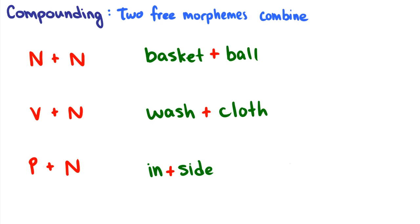The first one is compounding, and compounding occurs when two free morphemes combine. In other words, when two standalone words combine to make a new word. We have an example of a noun and a noun coming together to create a new noun. For instance, the word basketball. Basket is a noun, ball is a noun, and then we get the word basketball, which is a noun.